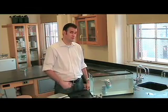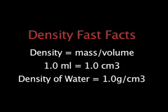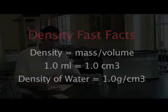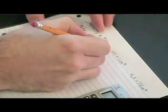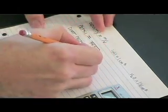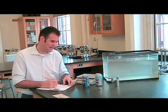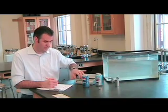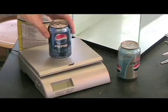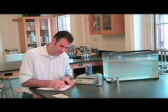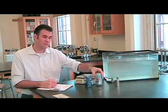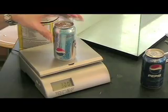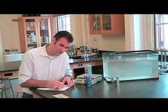Why does this happen? We're about to find out. Pepsi was nice enough to tell us the volume of each of these containers. The volume of each can is 355 milliliters. But what about the mass? Using this scale here, we're going to take a look and see what the mass of the regular Pepsi is — it's about 390 grams. We're going to do the same thing for the diet Pepsi, and it's about 365 grams.